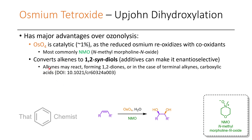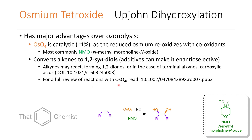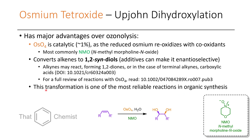While we mainly talk about alkenes being dihydroxylated, alkynes may also react, forming 1,2-diketones, and sometimes you also get cleavage of the alkyne forming carboxylic acids. There are references outlining what various alkynes do when treated with osmium tetroxide, though there are still fewer examples in the literature compared to alkenes. This transformation is worth remembering as one of the most reliable reactions in organic synthesis — if you have a double bond and treat it with osmium tetroxide, it will almost certainly be dihydroxylated.